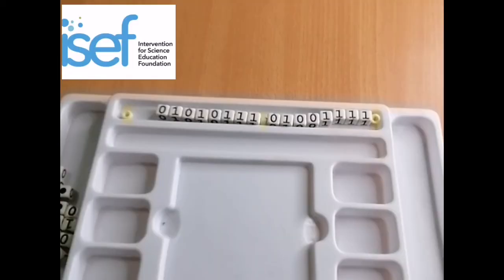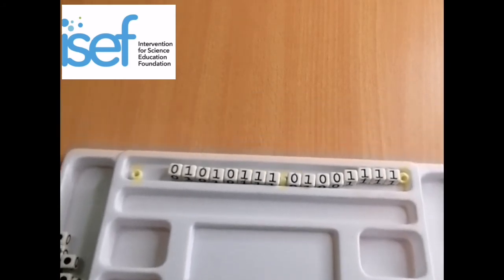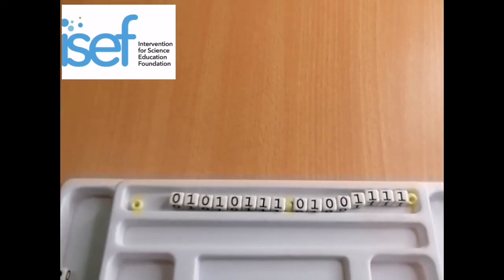Place one yellow bead at each end and one in the middle to separate the two letters of your initials. I have already sorted mine. I am going to use WO. W is 0101011 and O is 010011.